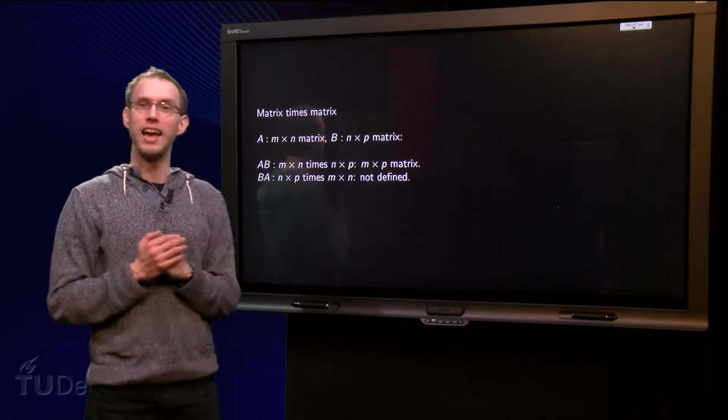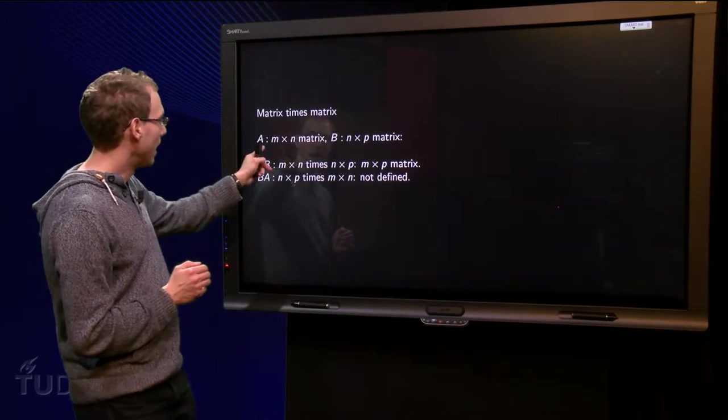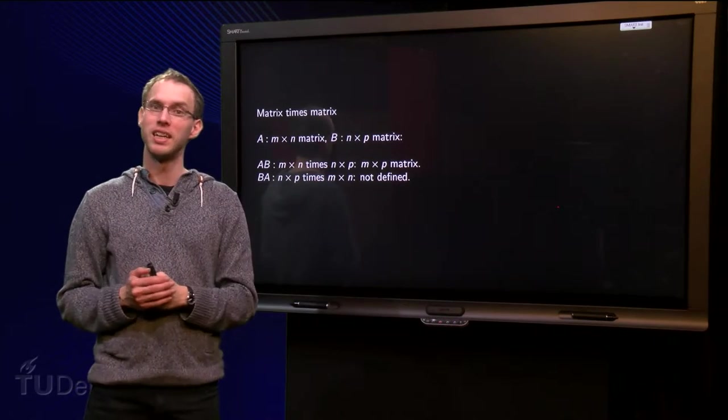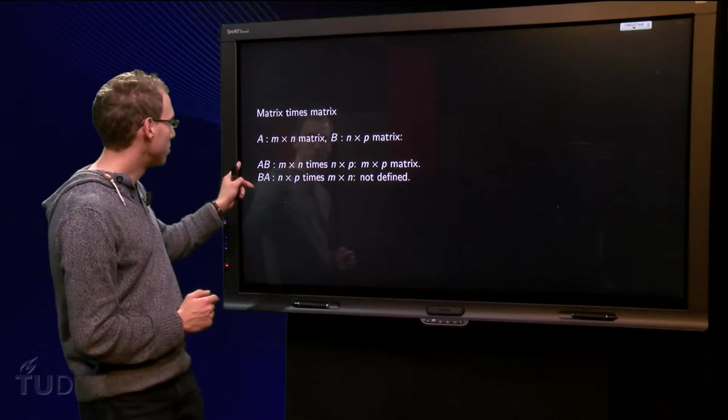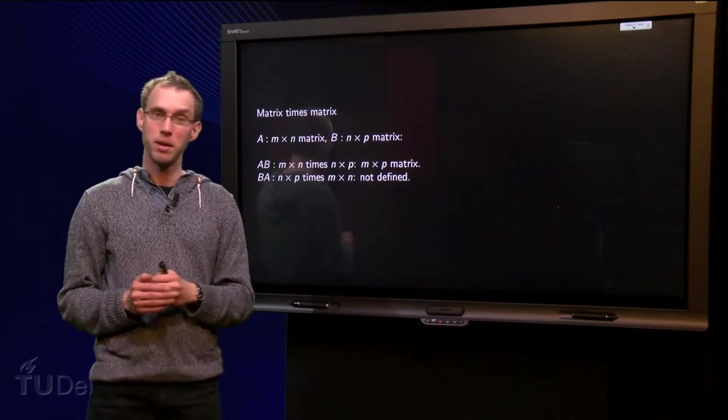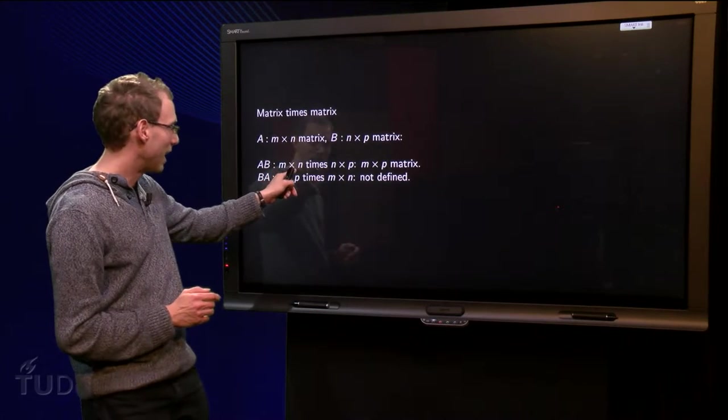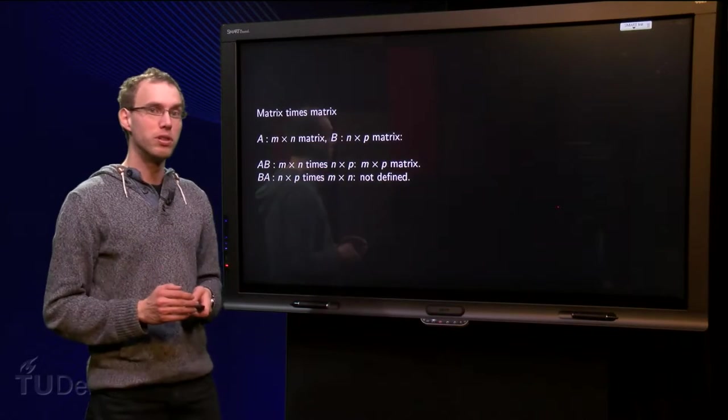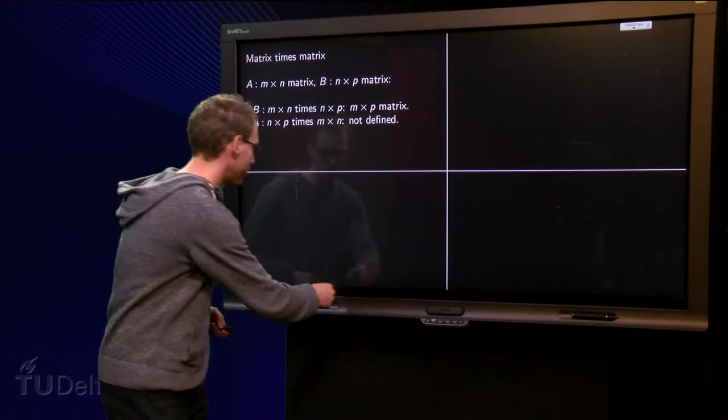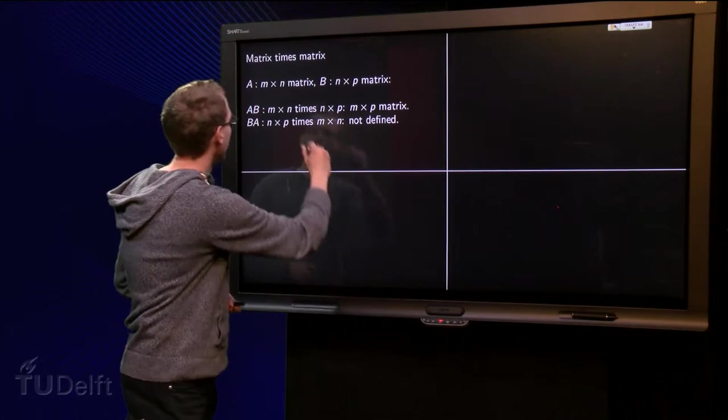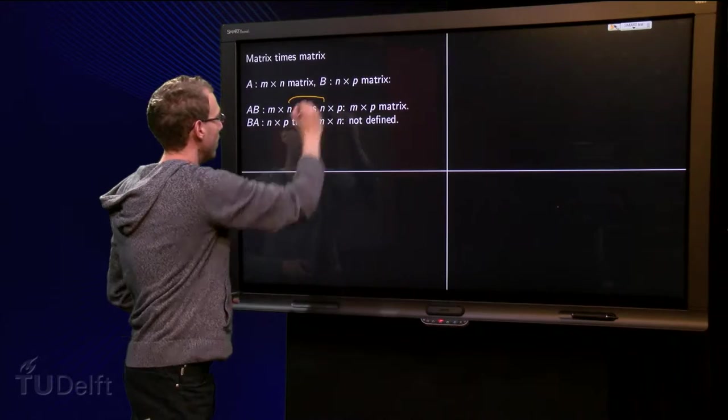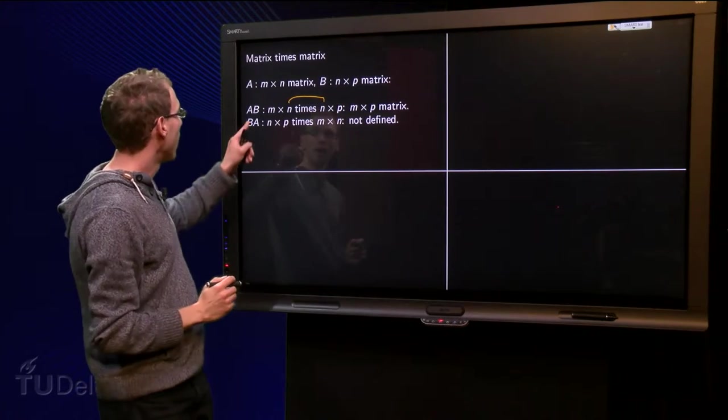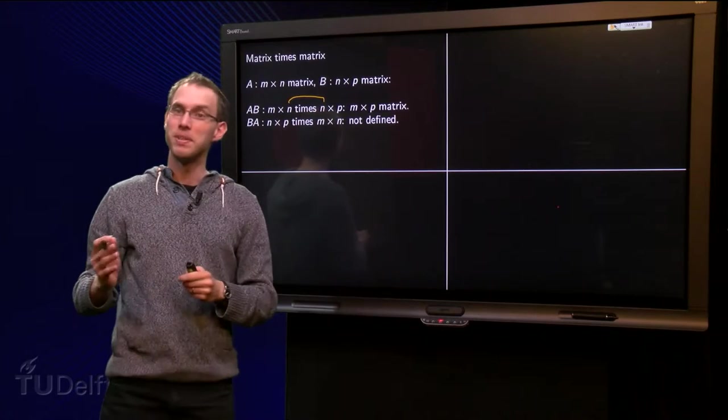Suppose we have two matrices A and B. A is an M times N matrix and B is an N times P matrix. In this case I can compute A times B, because that gives M times N times N times P. And you can only compute the matrix product if these over here are equal, which in this case is the case, and the result will be an M times P matrix.